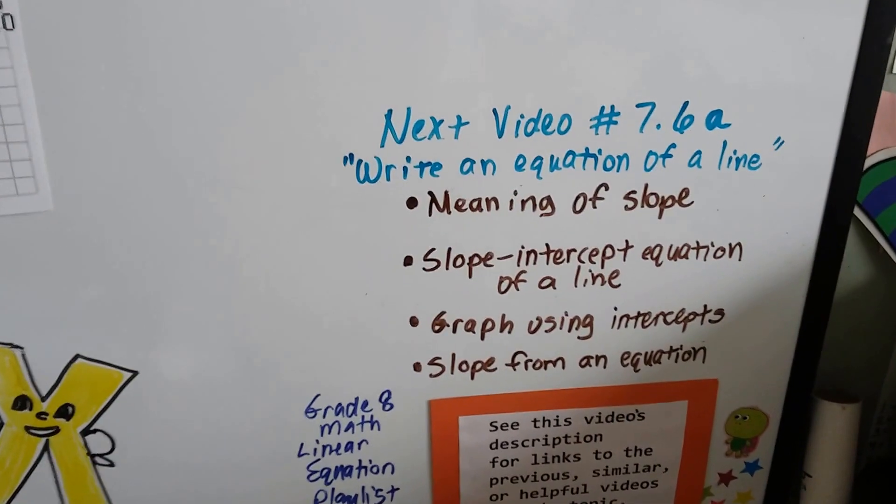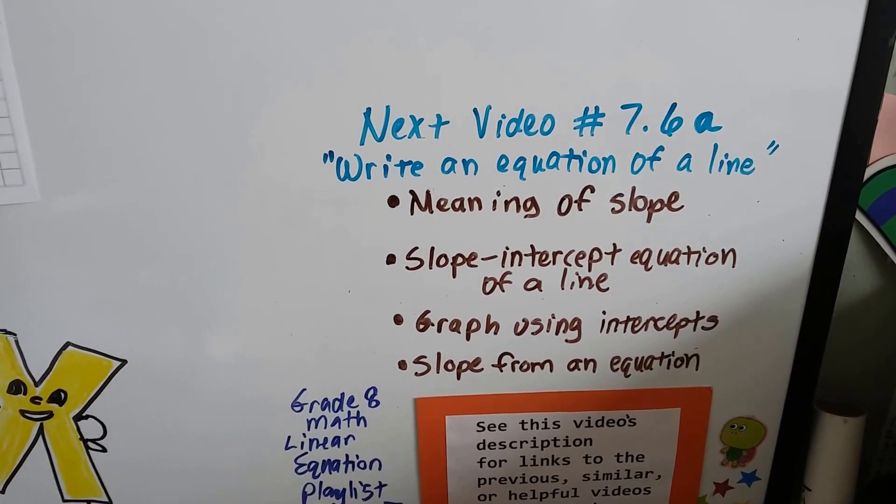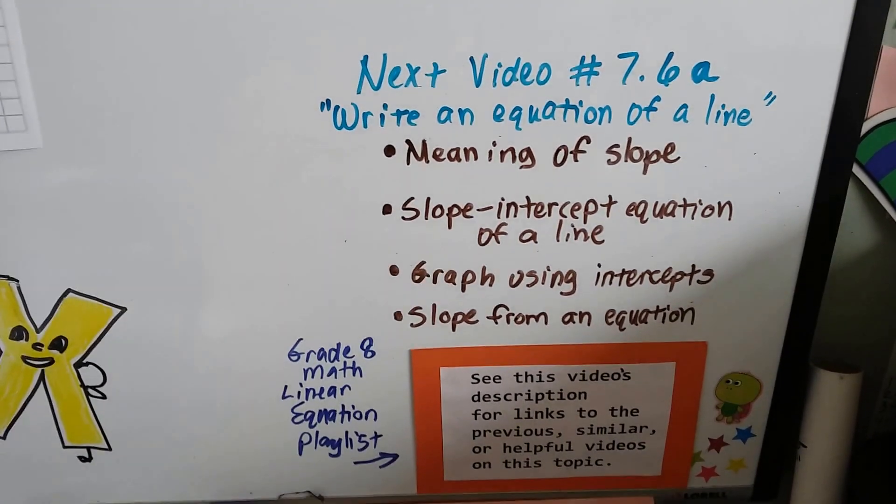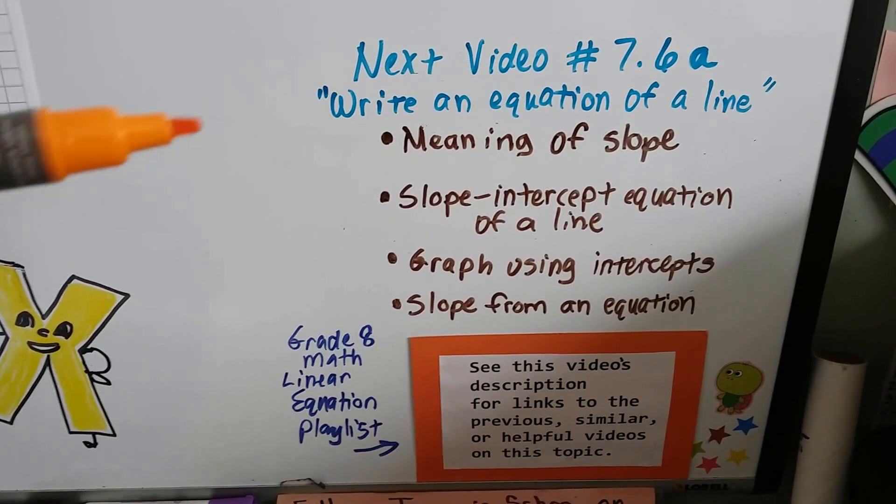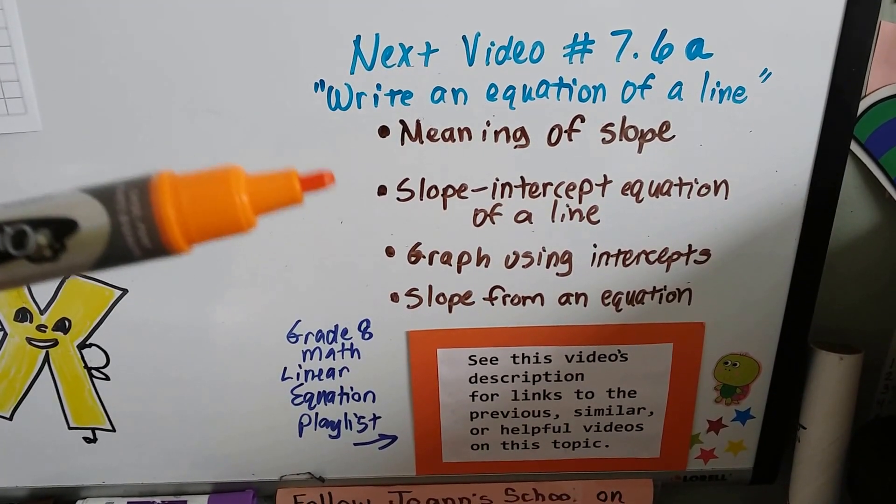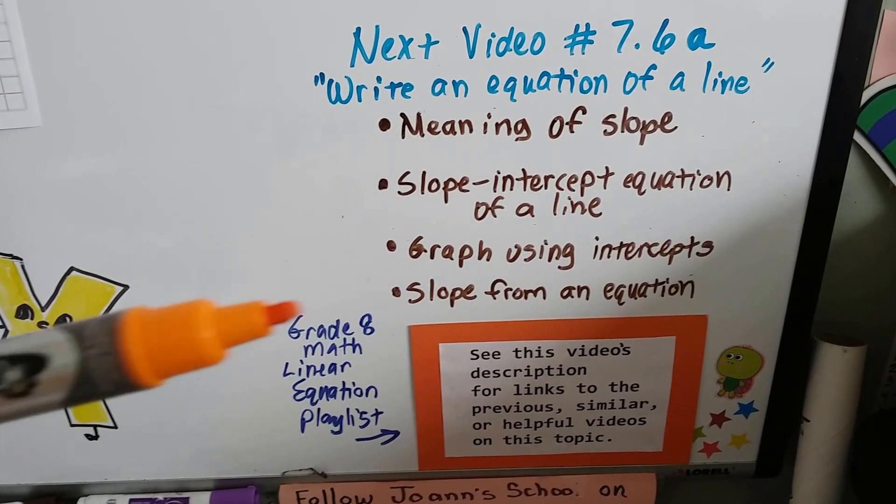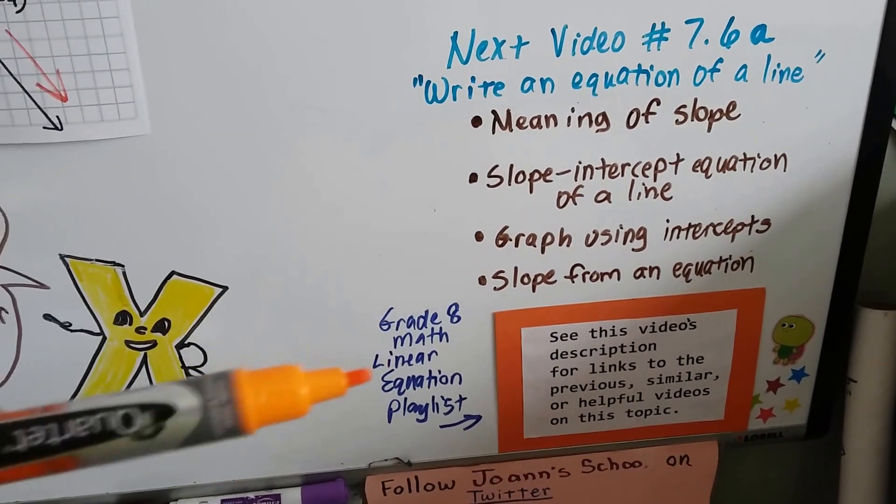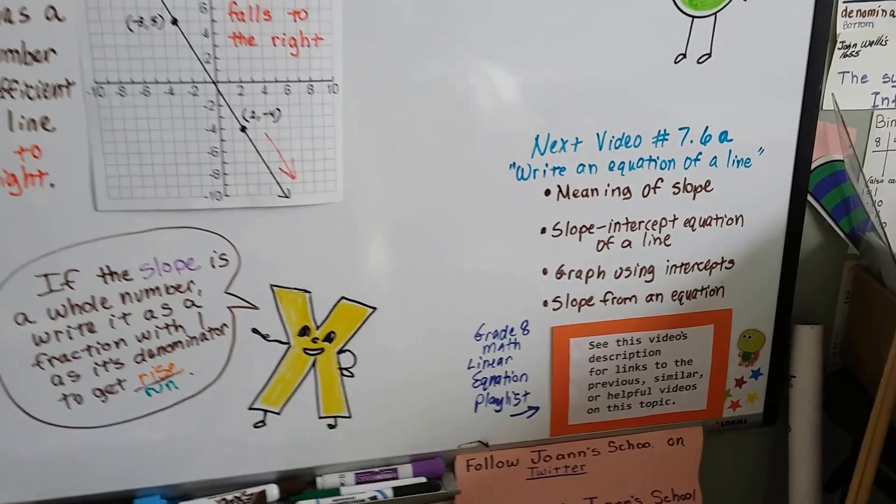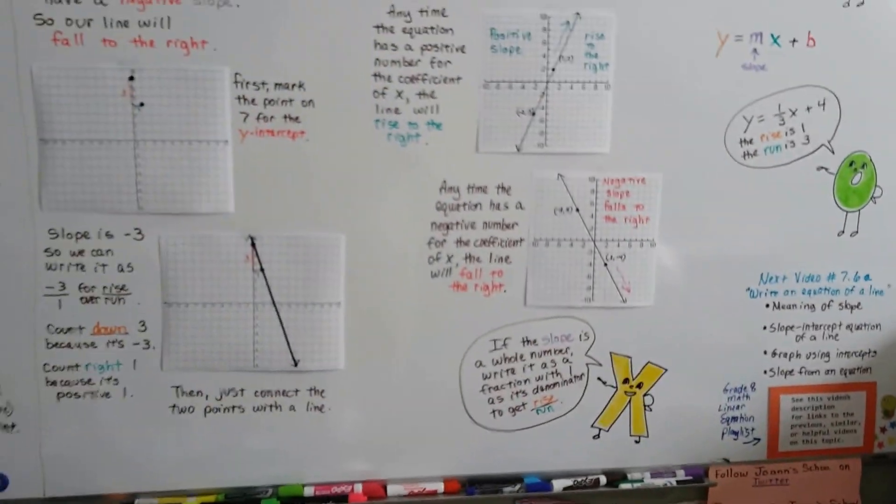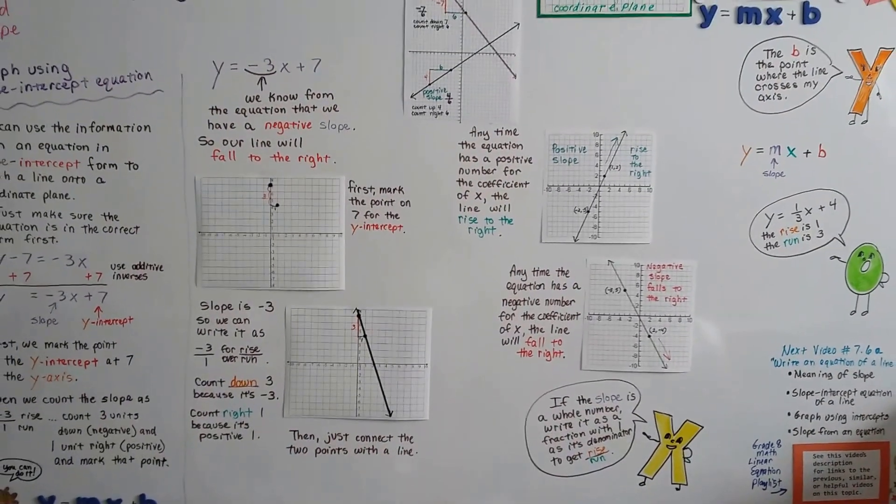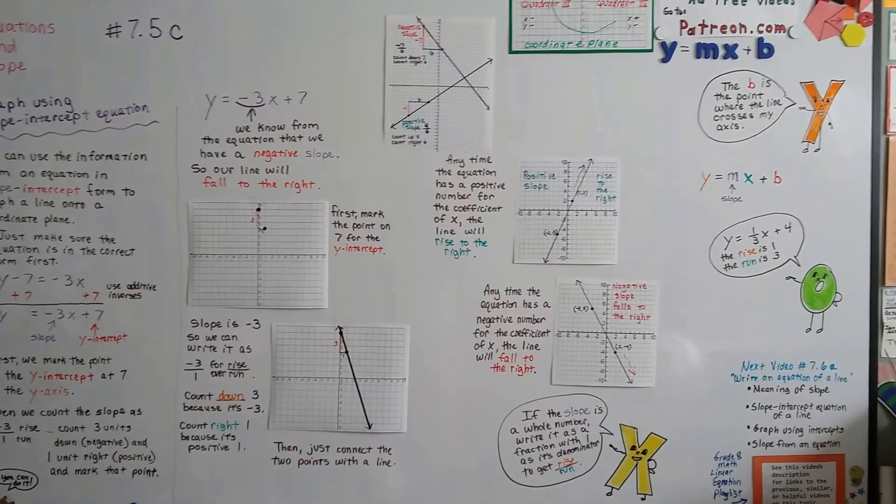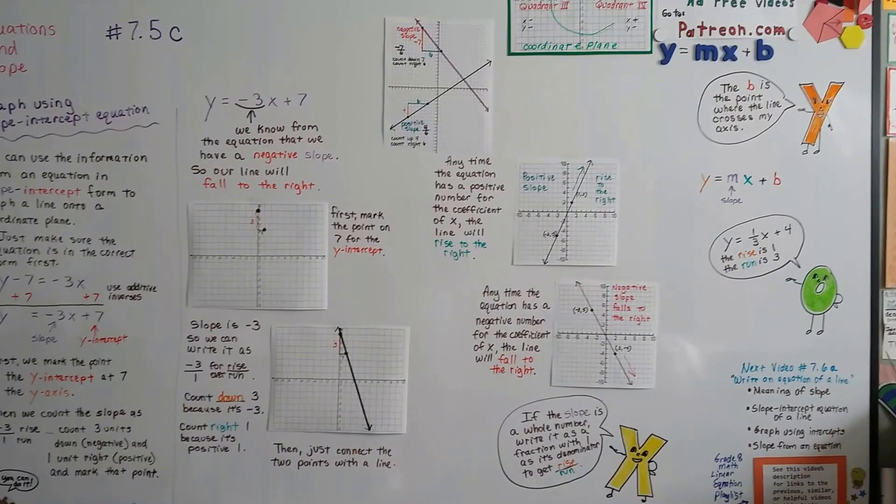Now our next video, 7.6a, we're gonna write an equation from a line. Now we made a line from an equation. Now we're gonna do the opposite. We're gonna write an equation from a line. And if you wanna see the description of this video, there's gonna be links for the meaning of slope, slope-intercept equation of a line. Graph using intercepts or the slope from an equation. Those will all be in the description. You can just click on them. And I'm gonna put a link to my 8th grade math linear equation playlist because that'll help you. And there's a lot of Algebra 1 in there. This Algebra 1 playlist just goes into more detail. I'll see you next video. I hope you're doing okay. Keep trying. We're gonna make it through this. Bye.